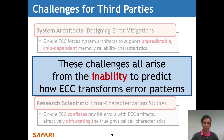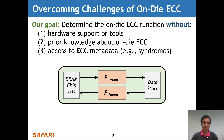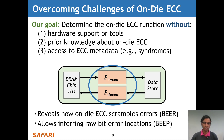These challenges all arise from the inability to predict how ECC transforms error patterns. To overcome these challenges, our goal is to determine the on-die ECC function without hardware support or tools, prior knowledge about on-die ECC, or access to ECC metadata such as error syndromes. In the context of a real DRAM chip, we want to know exactly what happens within the ECC encoder and decoder, because this would reveal exactly how on-die ECC scrambles errors, and would allow us to infer raw bit error locations just by looking at the post-correction errors.